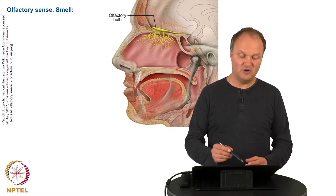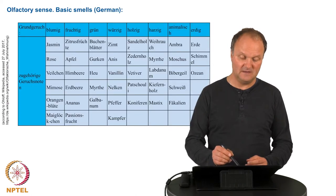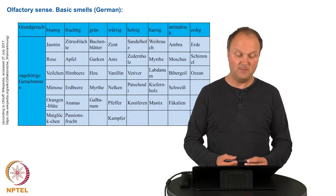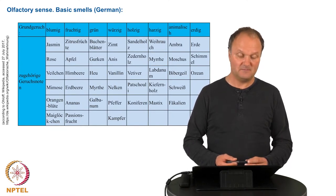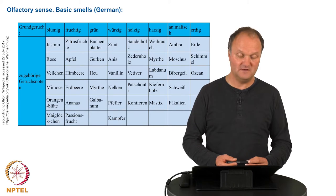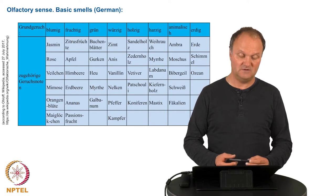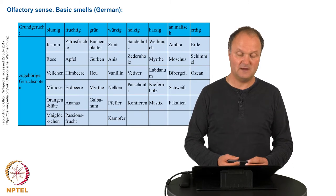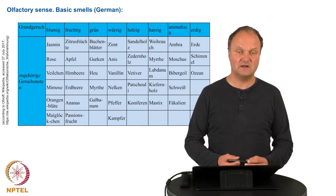There have been approaches to classify smells, and these are language specific because we need to describe the scents verbally. Here you see a classification for the German language into basic smells like blumig, fruchtig, grün, würzig, and the corresponding notes — for example, different kinds of flowers, fruits, or similar. But as mentioned, these classifications are very much language specific.